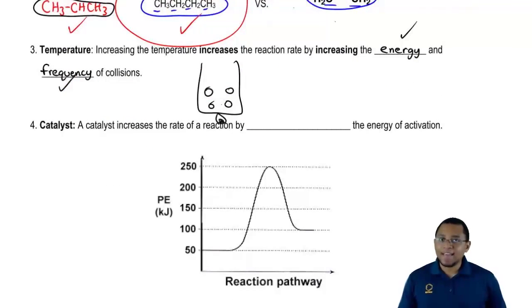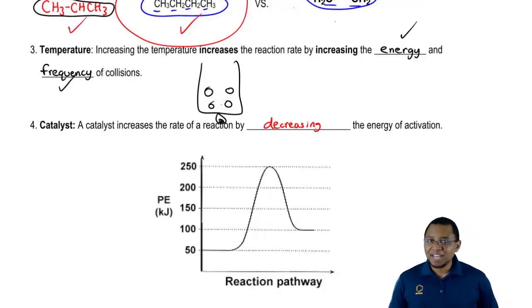Finally, the fourth thing that can affect our rate, which can either make it fast or slow, is a catalyst. A catalyst can increase the rate of the reaction by decreasing the energy of activation.